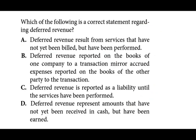Next question: which of the following is a correct statement regarding deferred revenue? Option A — deferred revenue results from services that have not yet been billed but have been performed. That statement is actually describing accrued revenue, not deferred revenue — you did the work but did not bill the client. Option B — deferred revenue reported on the books of one company corresponds to an accrued expense on the books of another company. That also relates to accrued revenue and its mirror transaction.